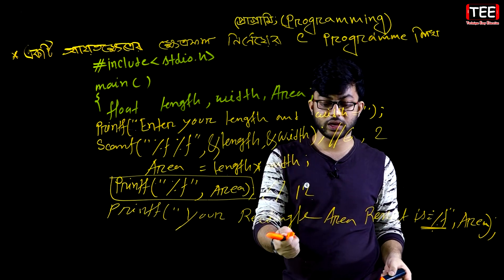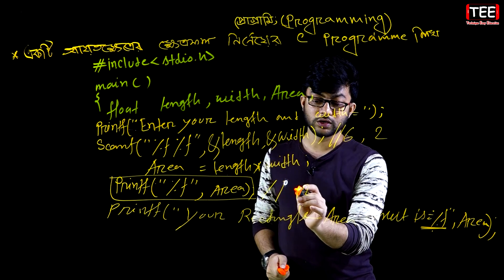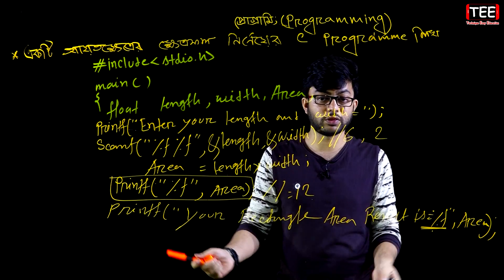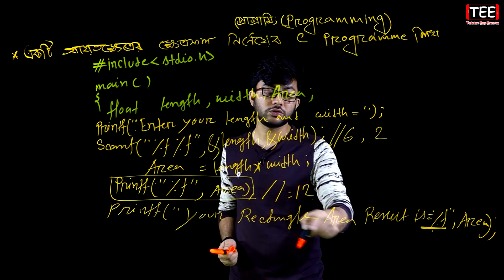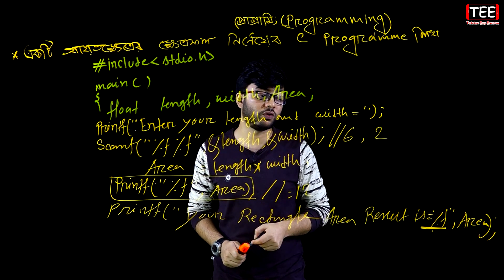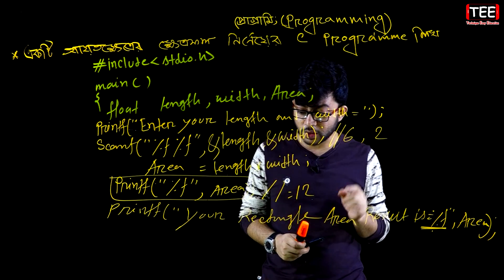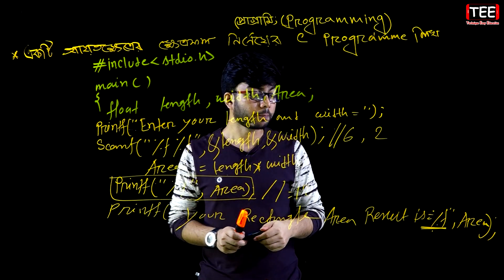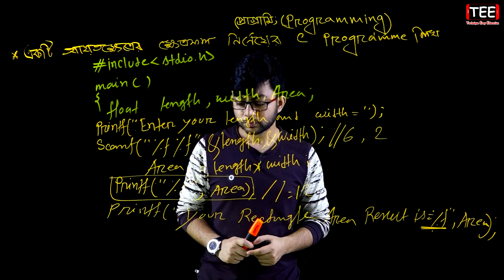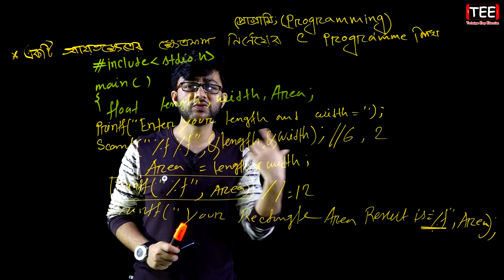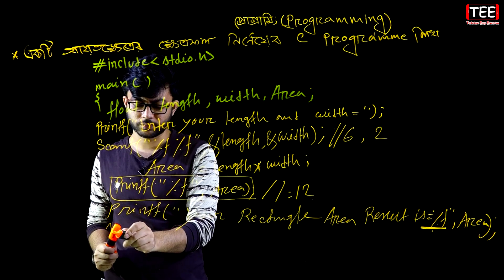The rectangle area result is equal. In the view of your rectangle area, result is equal. On the view of your rectangle area result is equal to 12. That is user friendly. We are in the view of that program.